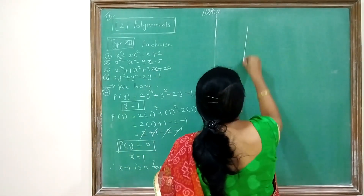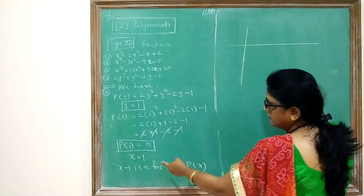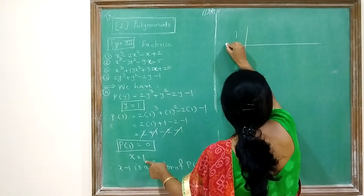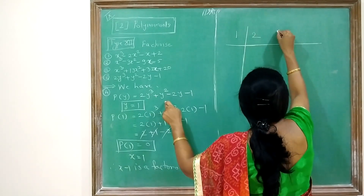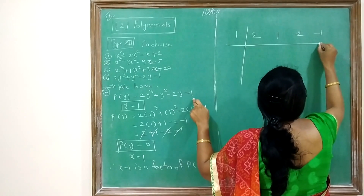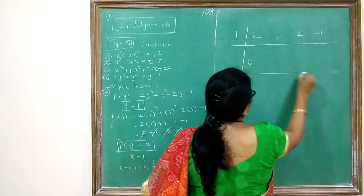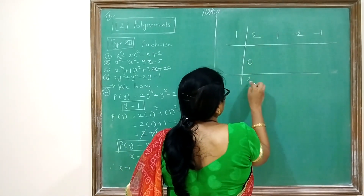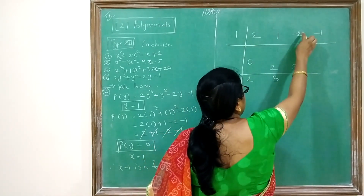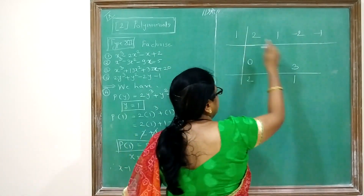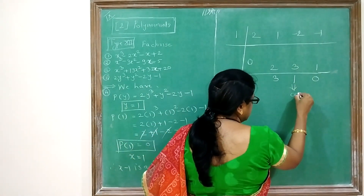Using synthetic division, the value that gives 0 is 1, so write 1 on the left. Coefficients: y³ is 2, y² is 1, y is −2, constant is −1. Write 0 first. 2 + 0 = 2; 2×1 = 2; 1 + 2 = 3; 3×1 = 3; −2 + 3 = 1; 1×1 = 1; −1 + 1 = 0.